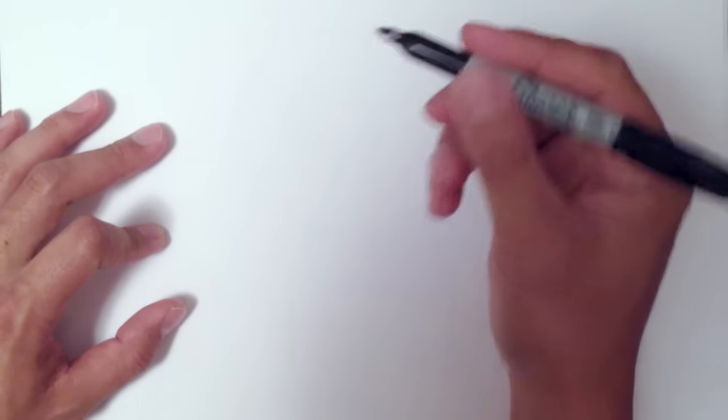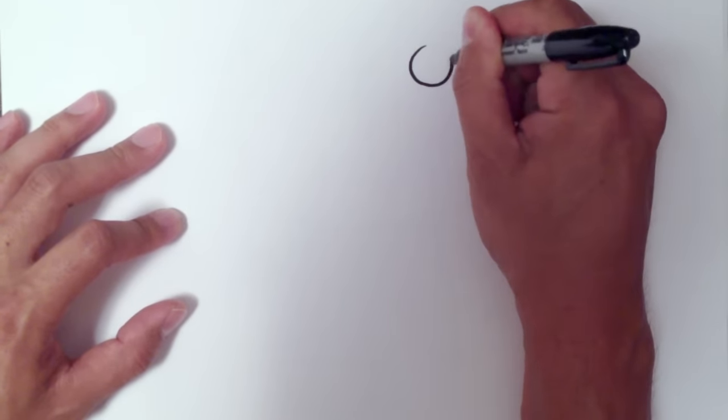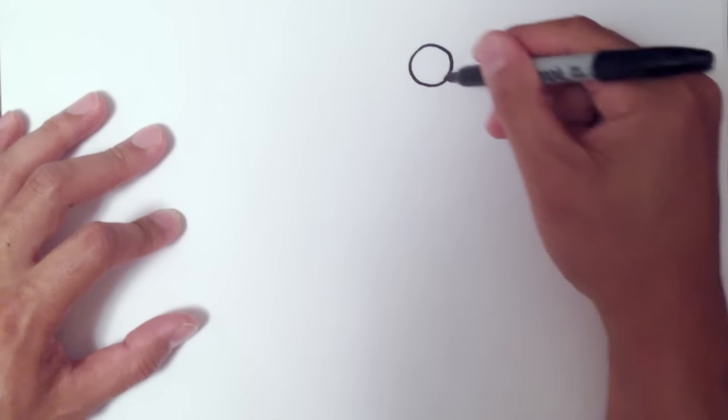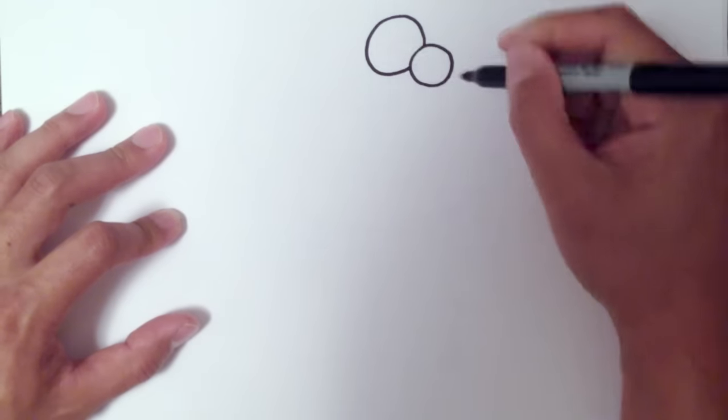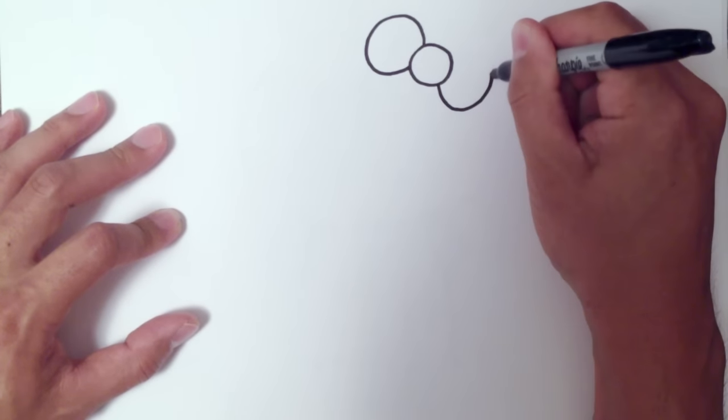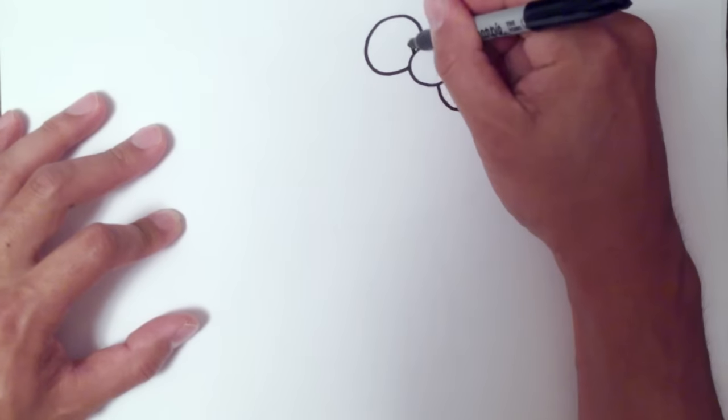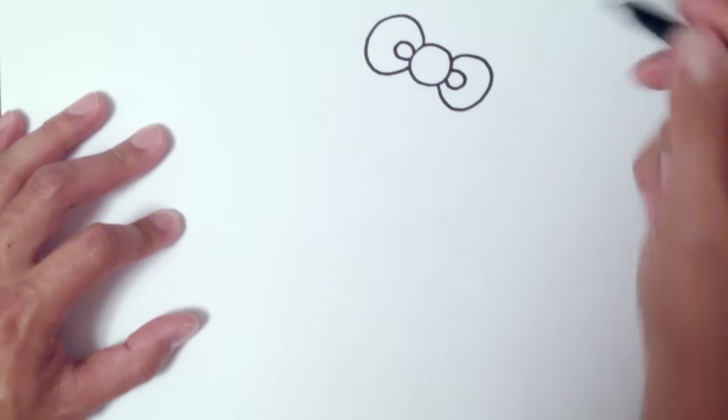Alright, here we go. First I'm going to start with the bow in her hair. Start with a big round circle and then the bow will come across this way. I'm going to draw one side of the bow and then the other side. Now I'm going to draw the little fold which is sort of like a circle inside each side of those circles.